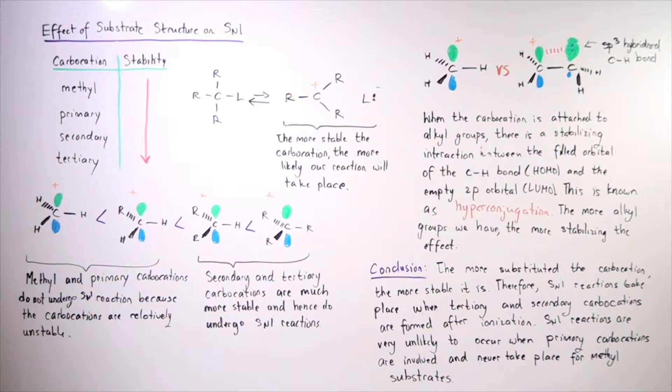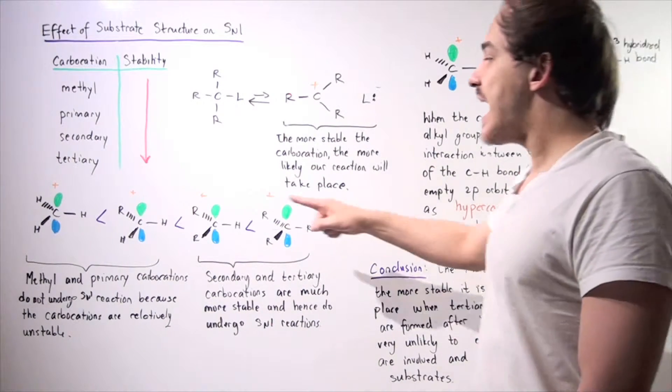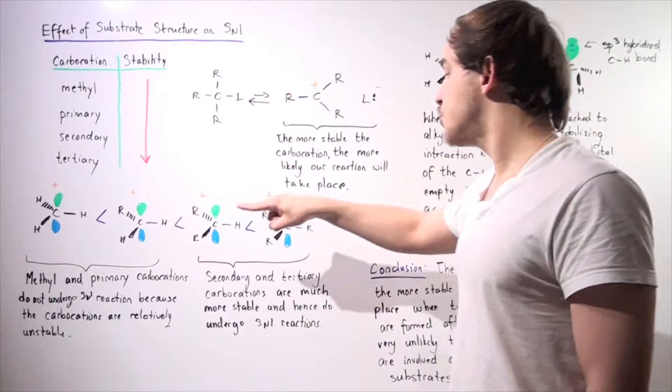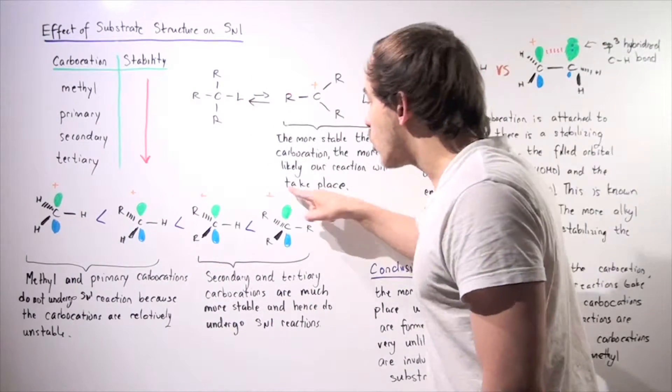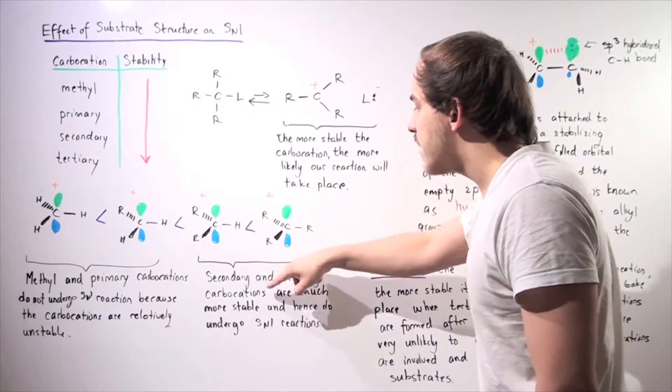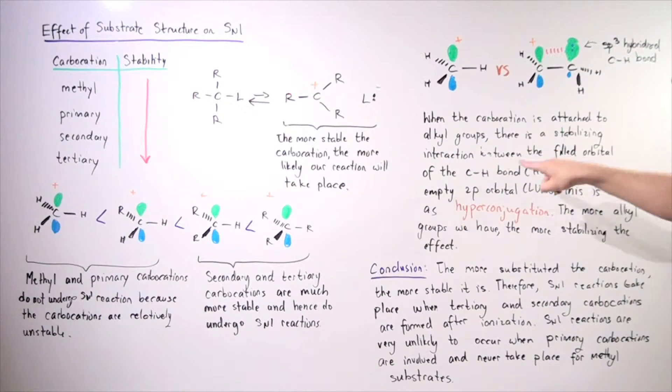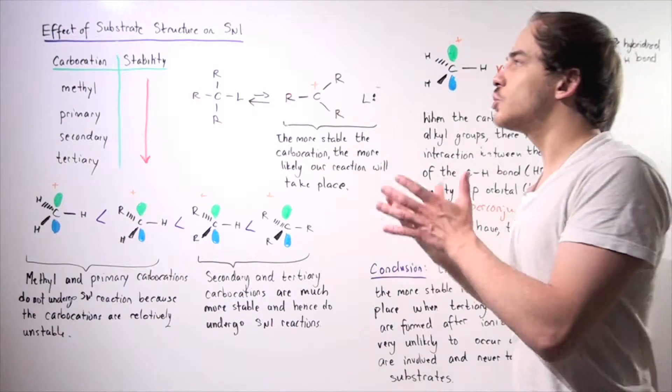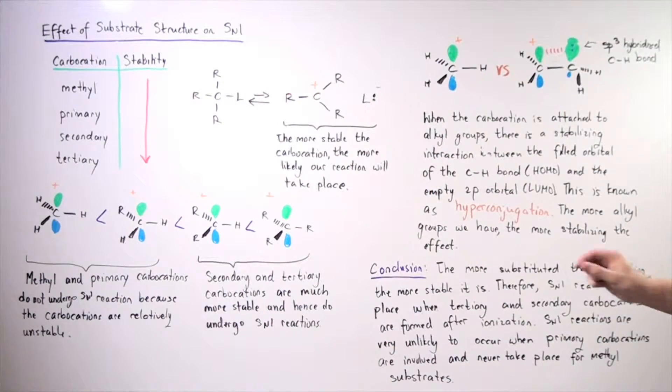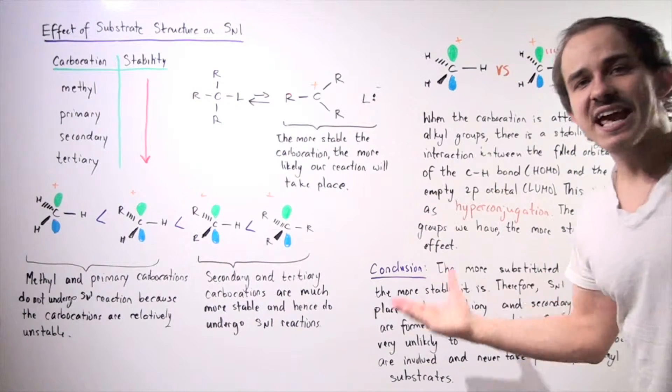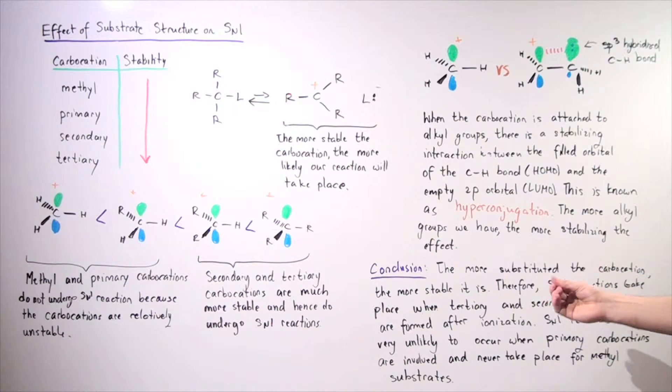Now, the more alkyl groups we have, the more substituted we become, and the more of these hyperconjugated bonds we have. So what is the conclusion? The conclusion is that the more substituted the carbocation, the more stable it is. Therefore,